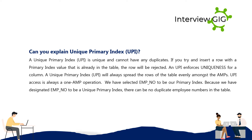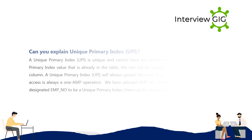Can you explain Unique Primary Index (UPI)? A UPI is unique and cannot have any duplicates. If you try to insert a row with a primary index value that already exists in the table, the row will be rejected. A UPI enforces uniqueness for a column and will always spread the rows of the table evenly amongst the AMPs. UPI access is always a one-AMP operation. For example, if EMP_NO is designated as a UPI, there can be no duplicate employee numbers in the table.